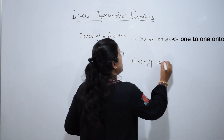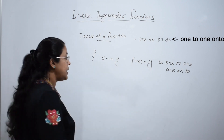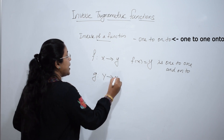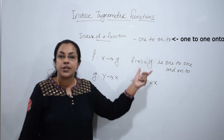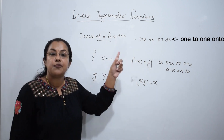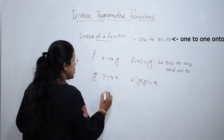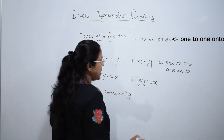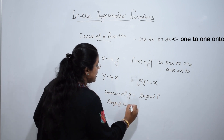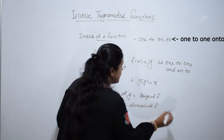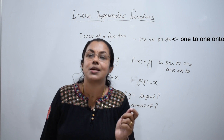Then, we can define a function G from Y to X such that G of Y is equal to X. The domain of G is equal to the range of F and range of G is equal to domain of F. Then, G is called the inverse of F.